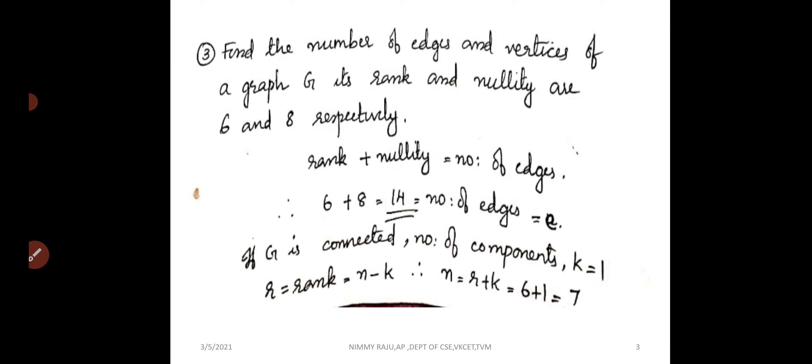The next one is, find the number of edges and vertices of a graph G, if its rank and nullity are given, that is 6 and 8. So we have rank is 6 and nullity equal to 8. We know that for a graph, the number of edges will be equal to sum of rank plus nullity.